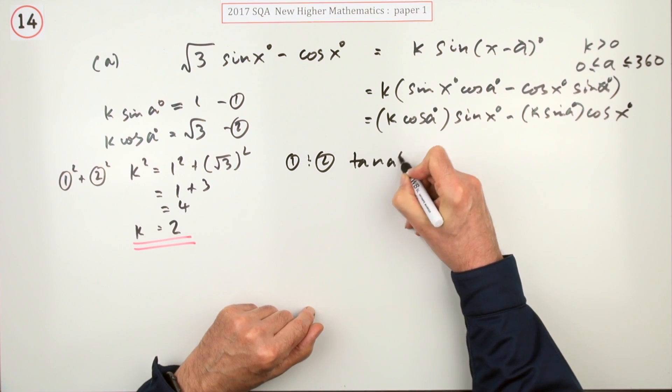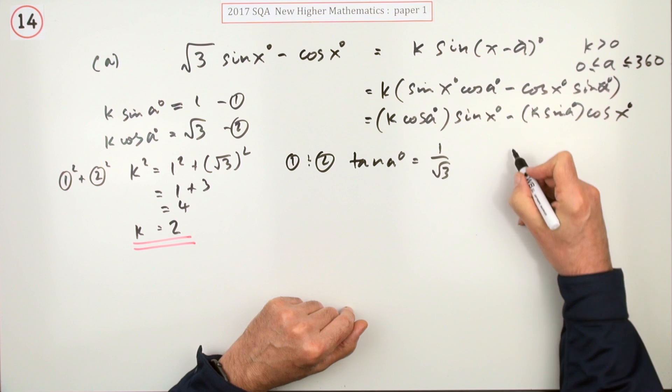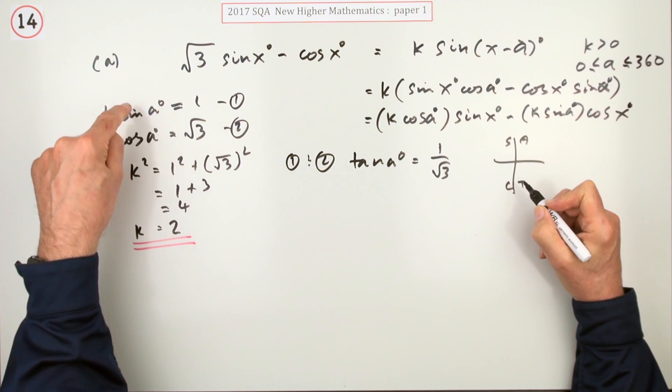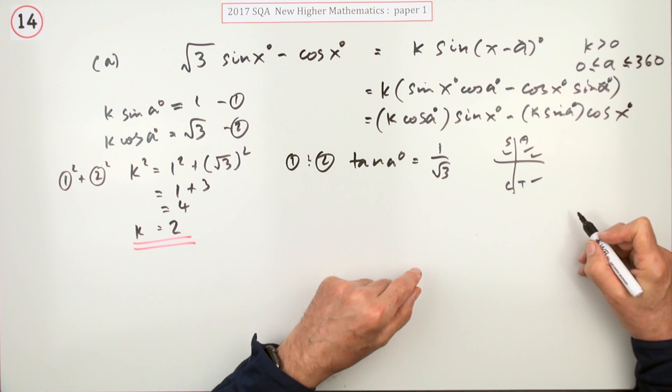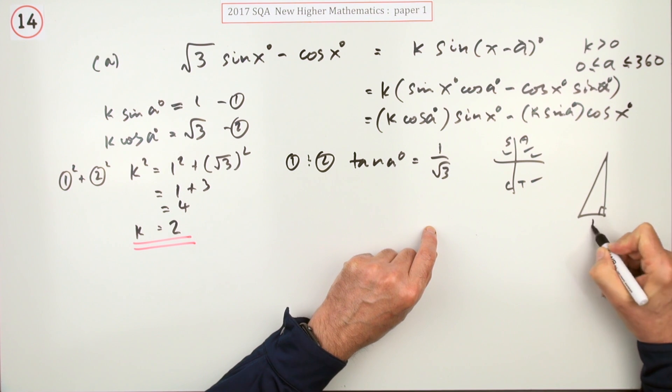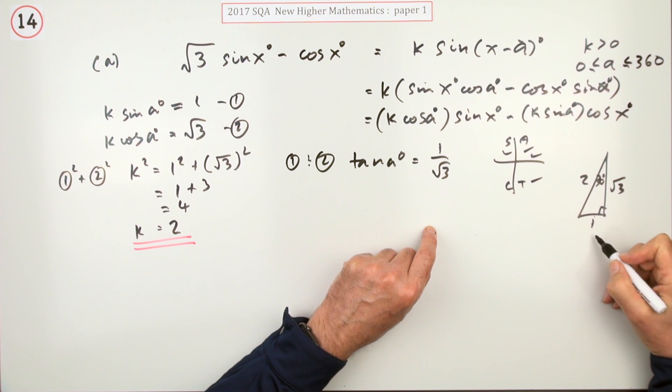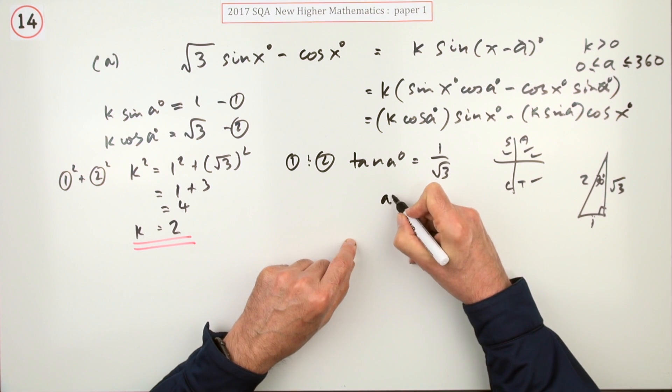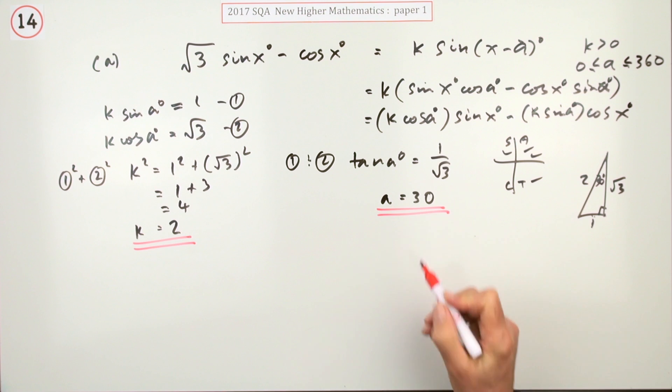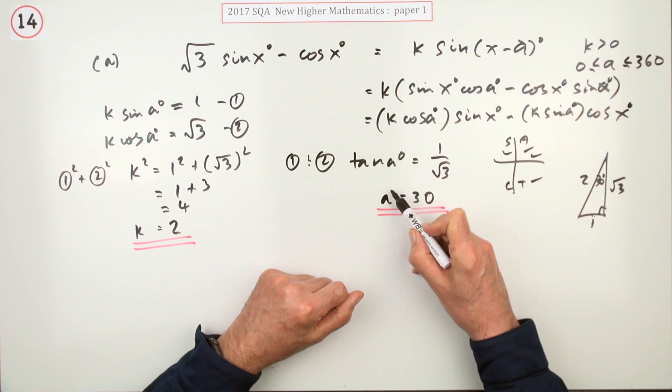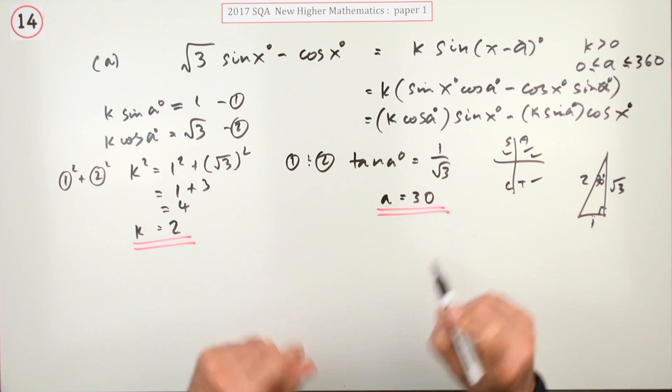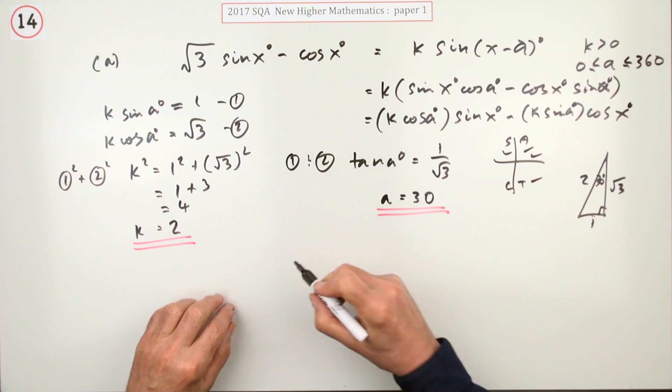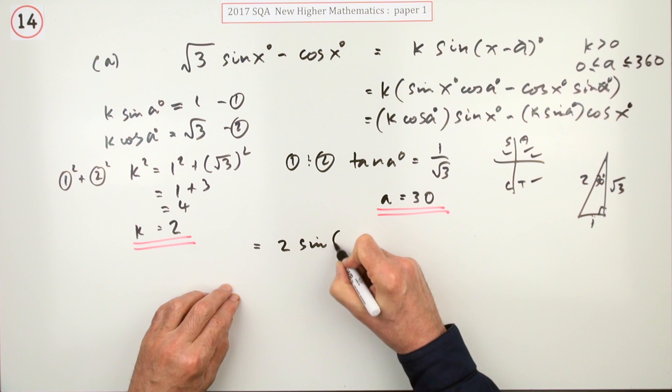And if you do equation 1 divided by equation 2, you'll have k divided by k which will cancel, sine over cos which will make the tan of a, and that'll be 1 over root 3. And a quick check, where is this? The sine's positive and the cosine's positive, so you're in the first quadrant, so it's just the case of what's the acute angle. And you know this one, you know that particular one there with the one for the shortest side, 2 and the root 3 for the medium one. One's opposite the smallest side, opposite the smallest angle. Tangent opposite over adjacent is 30. A is 30.